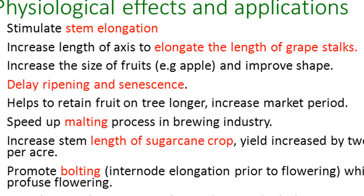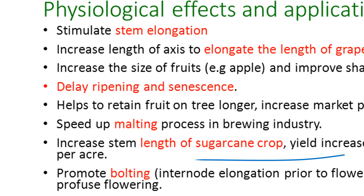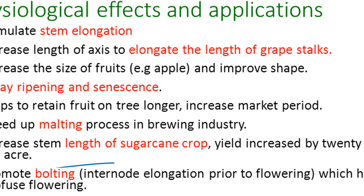Gibberellins speed up the malting process in the brewing industry. Malting refers to the yeast metabolism process involved in extracting products like beer. They also increase the stem length of the sugarcane crop, which is again an effect of stem elongation, and the yield increases by about 20 tons per acre. More length in sugarcane means more sugar can be extracted, increasing its commercial value.